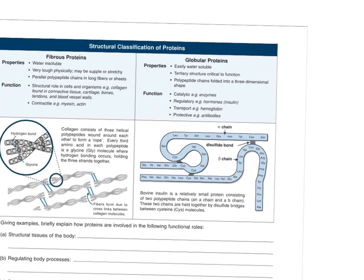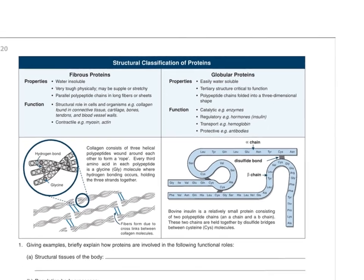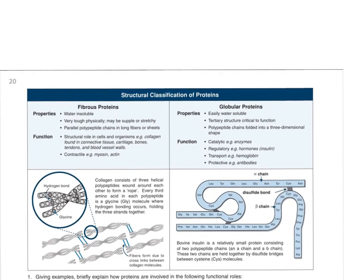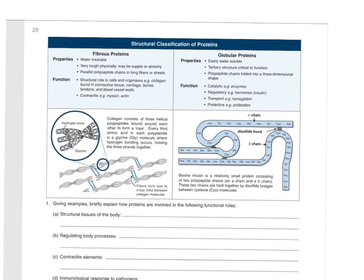When looking at proteins, there are fibrous proteins and globular proteins, and the difference is their structure. Fibrous means they form fibers like hair — these fibrous proteins wind around each other and form thick, strong strands. Your skin is made of collagen, woven together like cloth, and the material of that cloth is protein. What holds these polypeptides together into a protein called collagen? Hydrogen bonds.